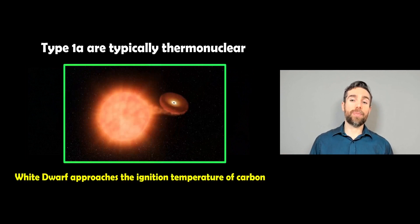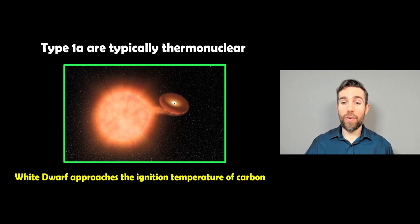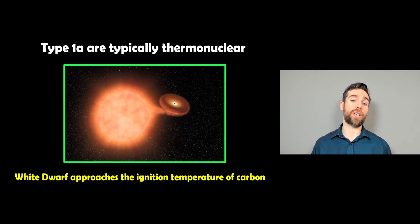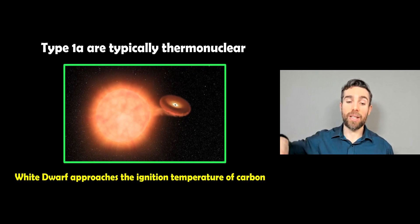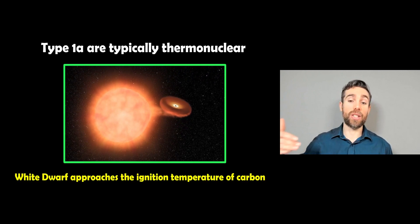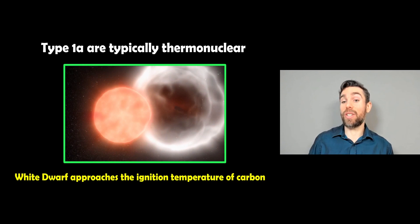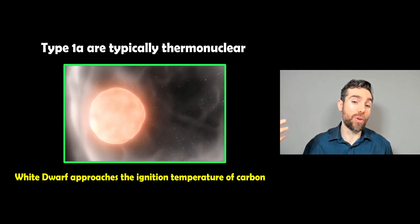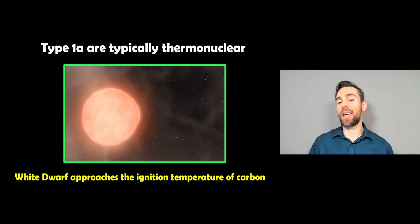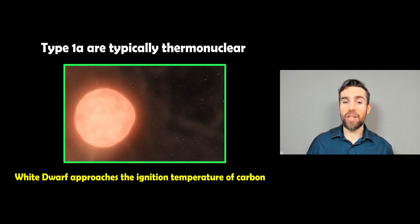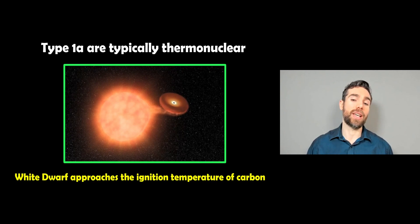Now type 1a, generally thermonuclear, so you've got a white dwarf that's pulling material off a larger red giant star. So you have this disc around it and what happens is it will get to a certain mass and then the entire star will reach the ignition temperature of carbon. It will then explode, it will always be the same energy, so it should be the same brightness, so quite useful for measuring distances in the universe.